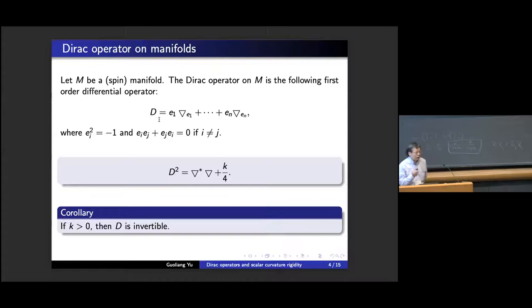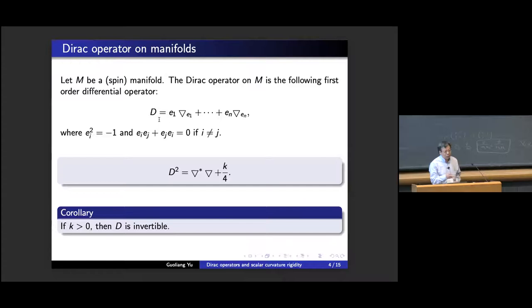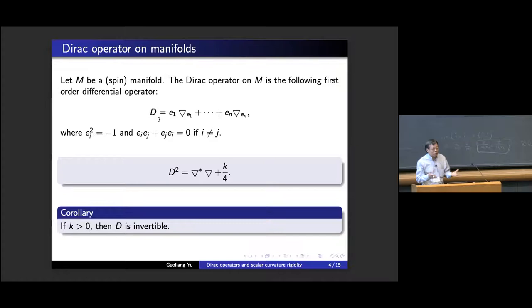This establishes a connection between curvature and invertibility of the operator, because the Laplacian is non-negative, and if the scalar curvature is positive, then the operator is invertible. The Dirac operator is an infinite-dimensional linear transformation. In the finite-dimensional case we know how to decide invertibility by computing the determinant, but in the infinite-dimensional case we don't have anything like the determinant, so we need another invariant.